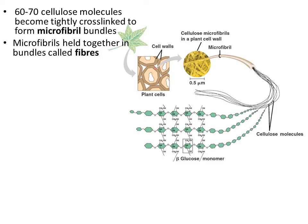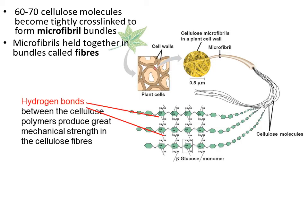Once a long chain of beta glucose molecules — a cellulose ribbon — is created, a large number of these cellulose molecules can be sandwiched together, with 60 or 70 becoming cross-linked and held in place by hydrogen bonds. This creates a polymer with a lot of mechanical strength, as each cellulose molecule contributes to forming a microfibril. These microfibrils are then grouped together into fibres, creating the fibrous nature of the cell wall.